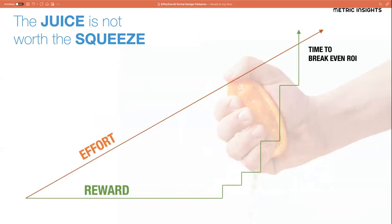Consider the typical journey a user goes through when they want to understand how their business is changing today. They're going to go through a whole effort to find that out. They might open one dashboard and realize it's not the right one — it's the wrong version. They find the right version, but the numbers look pretty much the same as last week. Nothing's really changed, so they didn't get any value out of that even though they opened it. They look at another dashboard for a different KPI they're interested in — that didn't change either. So they're spending a lot of effort as a consumer, typically using dashboards, with no reward initially.